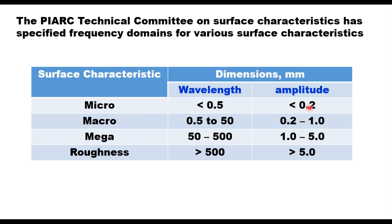For micro surface, the wavelength is less than 0.5 millimeter and amplitude is 0.2 millimeter or less. Similarly, for macrostructure, and for mega structures, we classify it as roughness when the wavelength is more than 500 millimeter and amplitude is more than 5 millimeter.